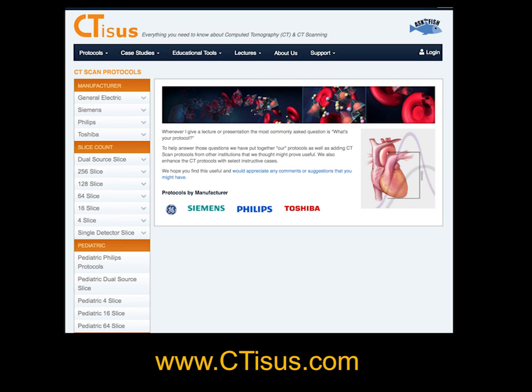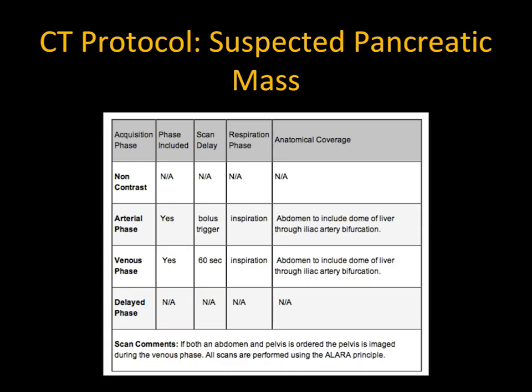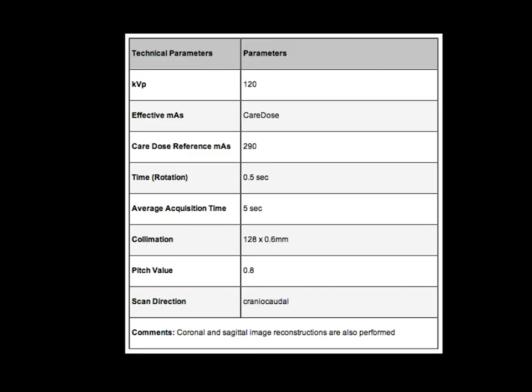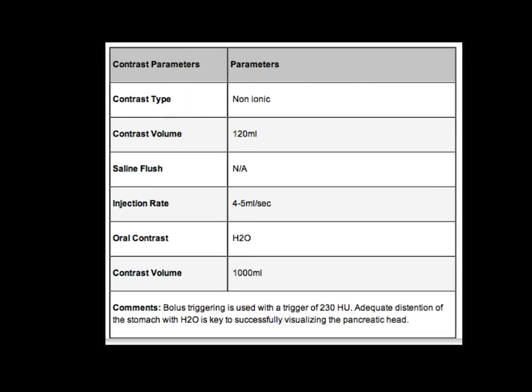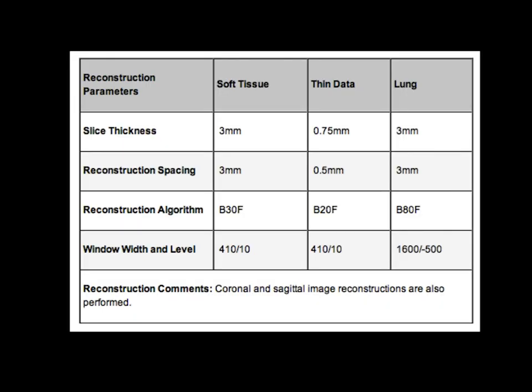What's most helpful is to have protocols at your institution that are clearly structured. For example, for a suspected pancreatic mass, we perform dual-phase arterial imaging — no non-contrast or delayed phases. You can see the anatomic coverage, the scan parameters, the contrast volumes and injection rate, and whether oral contrast is used. We then talk about reconstructions: thick sections at 3 mm and thin at 0.75 mm, the reconstruction algorithm, and how we film the images.